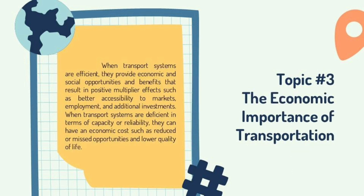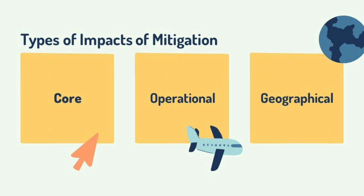Topic 3: The Economic Importance of Transportation. When transport systems are efficient, they provide economic and social opportunities and benefits that result in positive multiplier effects, such as better accessibility to markets, employment, and additional investments. When transport systems are deficient in terms of capacity or reliability, they can have an economic cost such as reduced or missed opportunities and lower quality of life. Types of impacts of transportation include core, operational, and geographical.